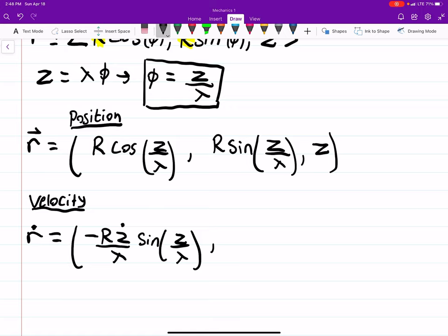Same thing, we have to do another chain rule. R is a constant. This will be R z dot over lambda cosine z over lambda. And then the z component is the easiest - that's just z dot.